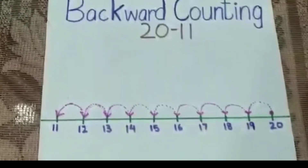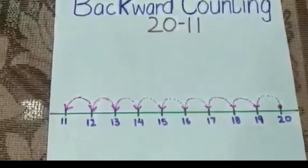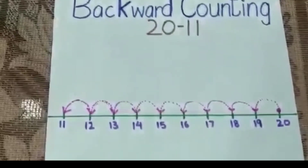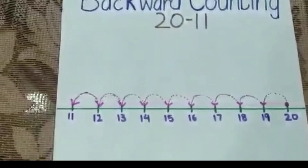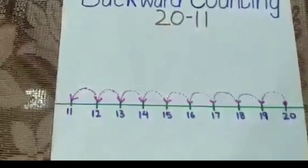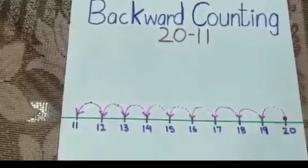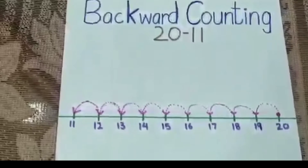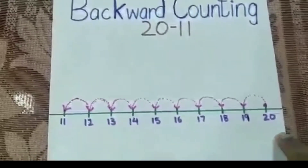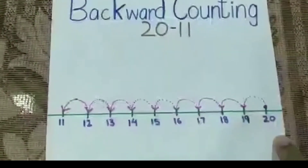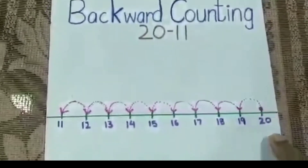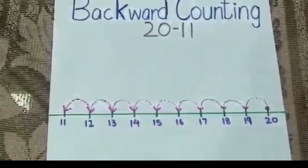So children, do you remember this sheet? We have done it last time also for 10 to 1 — we made the number line and did the backward counting. In the same way, we have made this number line from 11 to 20 today and we are going to do the backward counting. You can also do this at home.